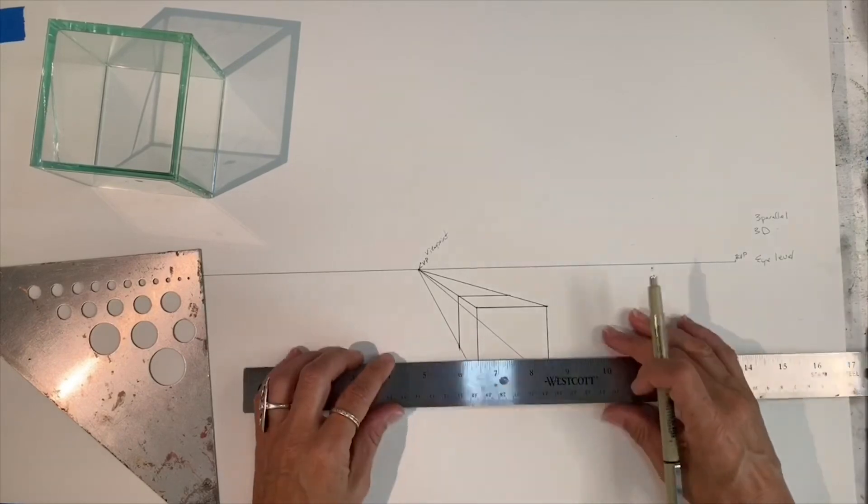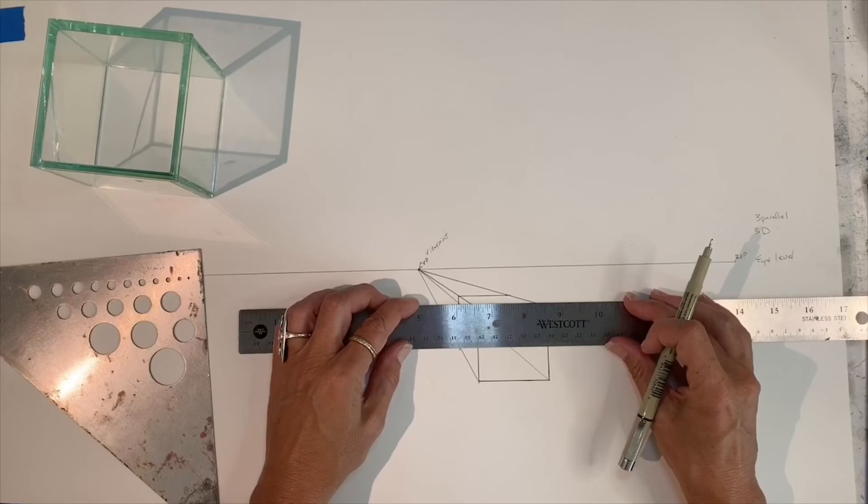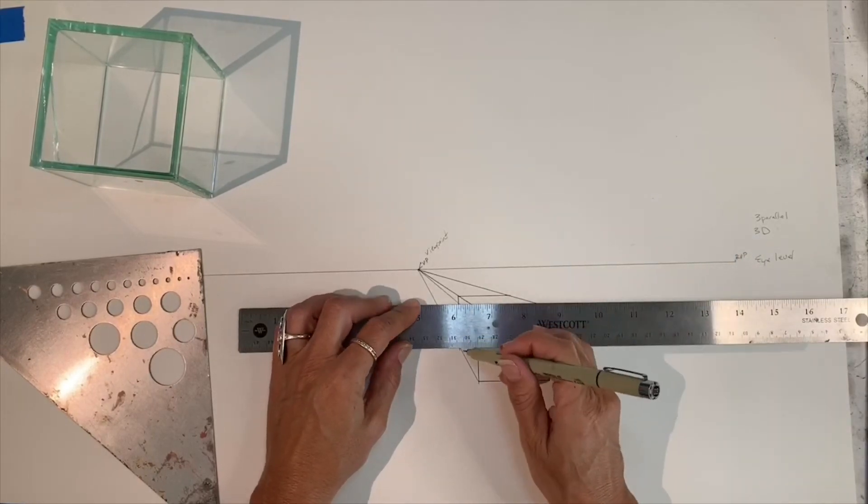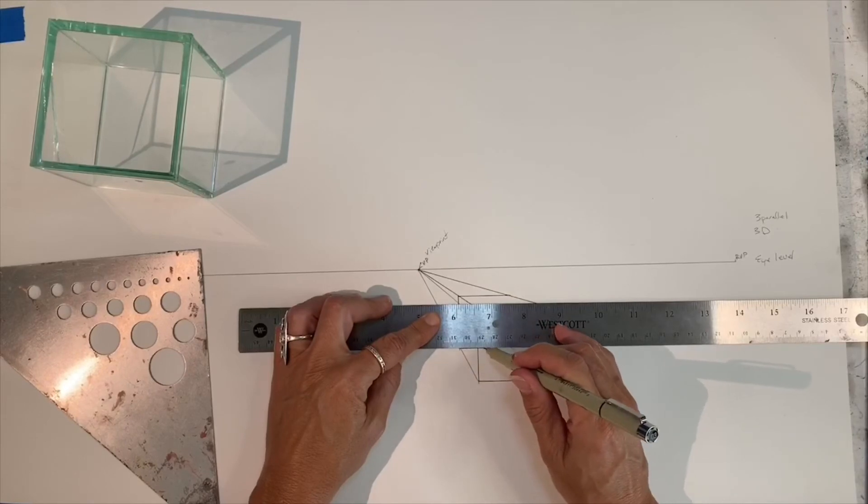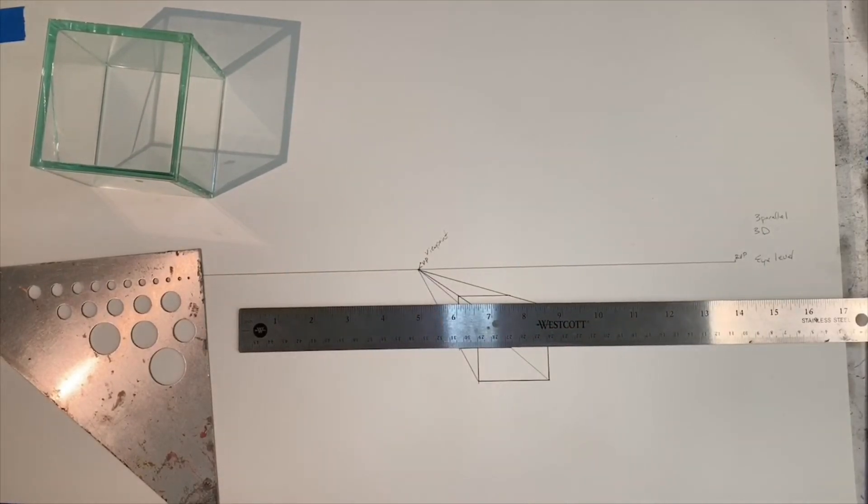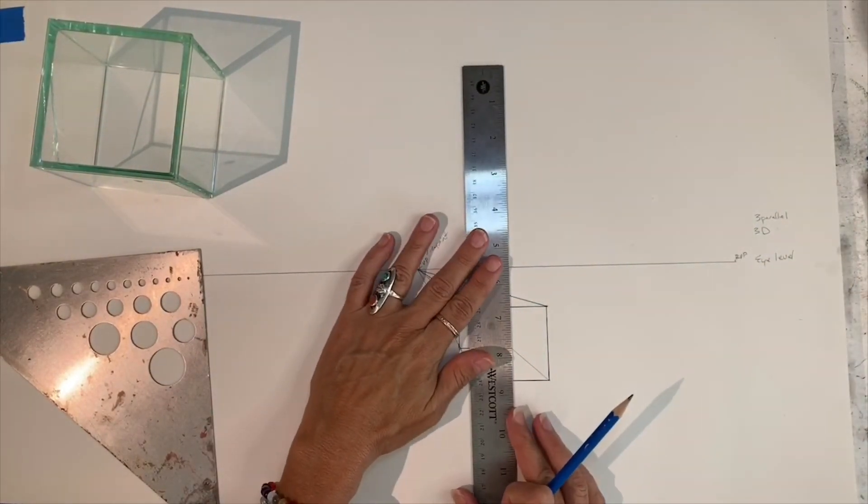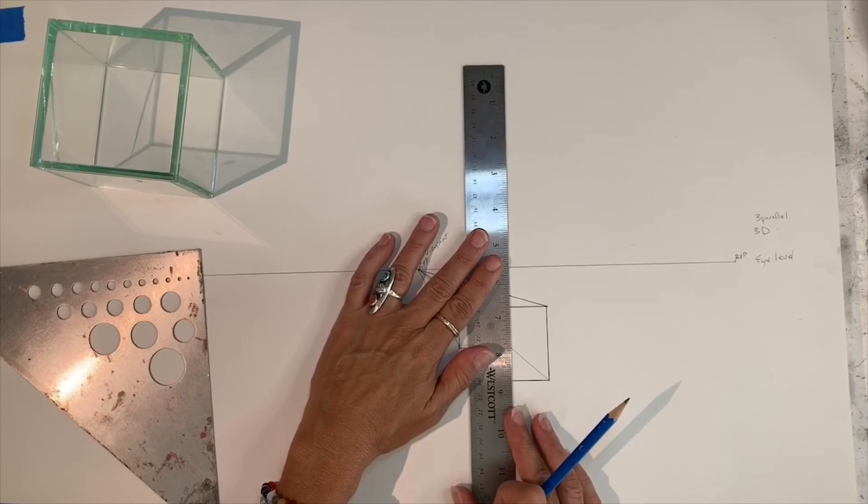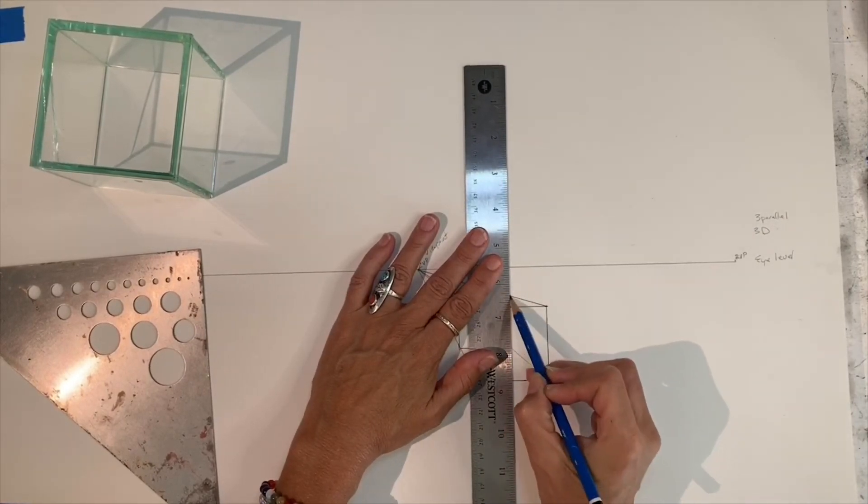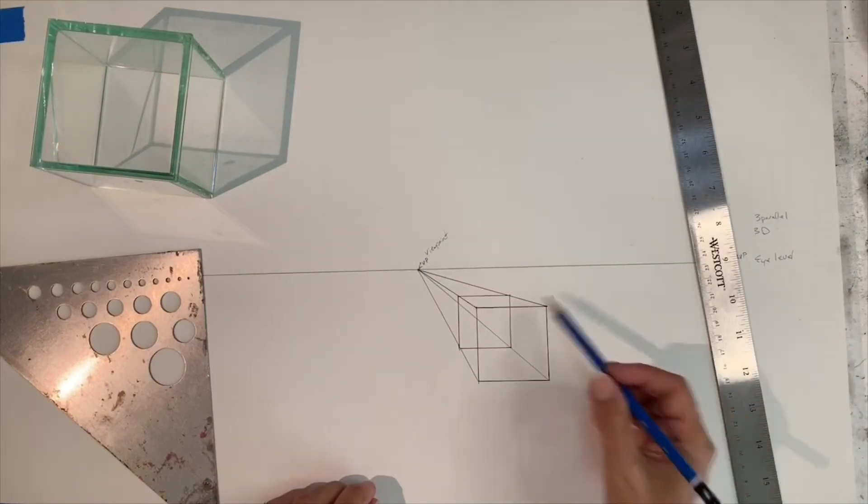So for your back edge, easy peasy, just go from that back corner. I'm trying to not get my head in the way. So it's a little tough. And I didn't want to use my pen for that. Use your pencil because this is the invisible part. And then this should match here to here. And you have your cube in 3D.